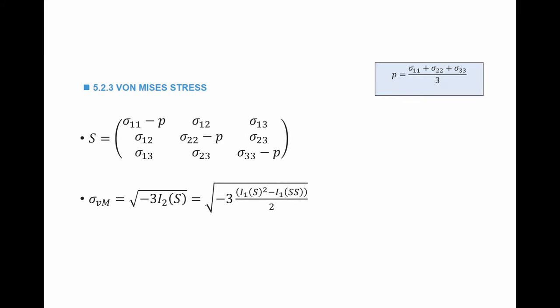The third stress measure is the von Mises stress. It is one of the invariants of the deviatoric stress tensor. The deviatoric stress tensor S equals the Cauchy stress tensor minus P times the identity matrix, where P is the average longitudinal stress: (sigma_11 plus sigma_22 plus sigma_33) divided by 3. The diagonal components of S are sigma_11 minus P, sigma_22 minus P, and sigma_33 minus P, while the off-diagonal components equal the shear stress components.